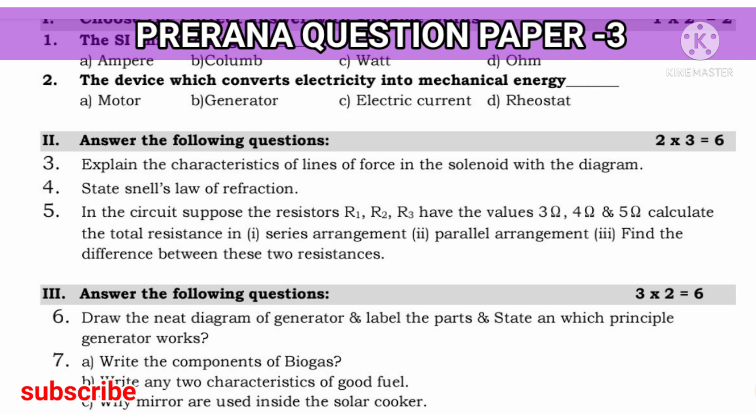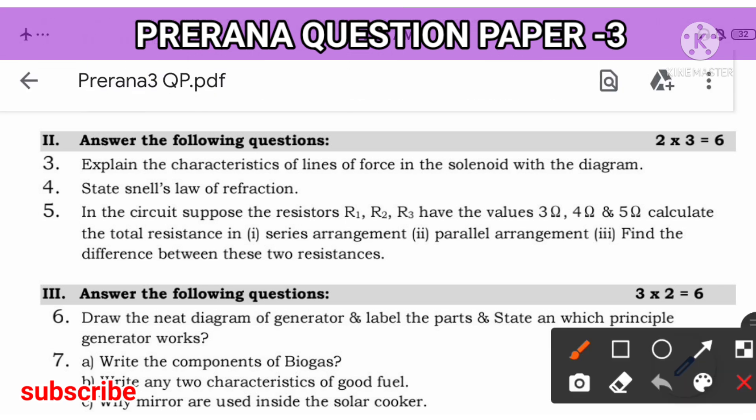Moving to fifth question, in the circuit, suppose resistors R1, R2, R3 have the values 3 ohm, 4 ohm and 5 ohm. Calculate the total resistance in the series arrangement and also in the parallel arrangement and write the difference between series and parallel. Already I have told you, in series, you directly add this: 3 ohm plus 4 ohm plus 5 ohm. Because R1 plus R2 plus R3 in series arrangement.